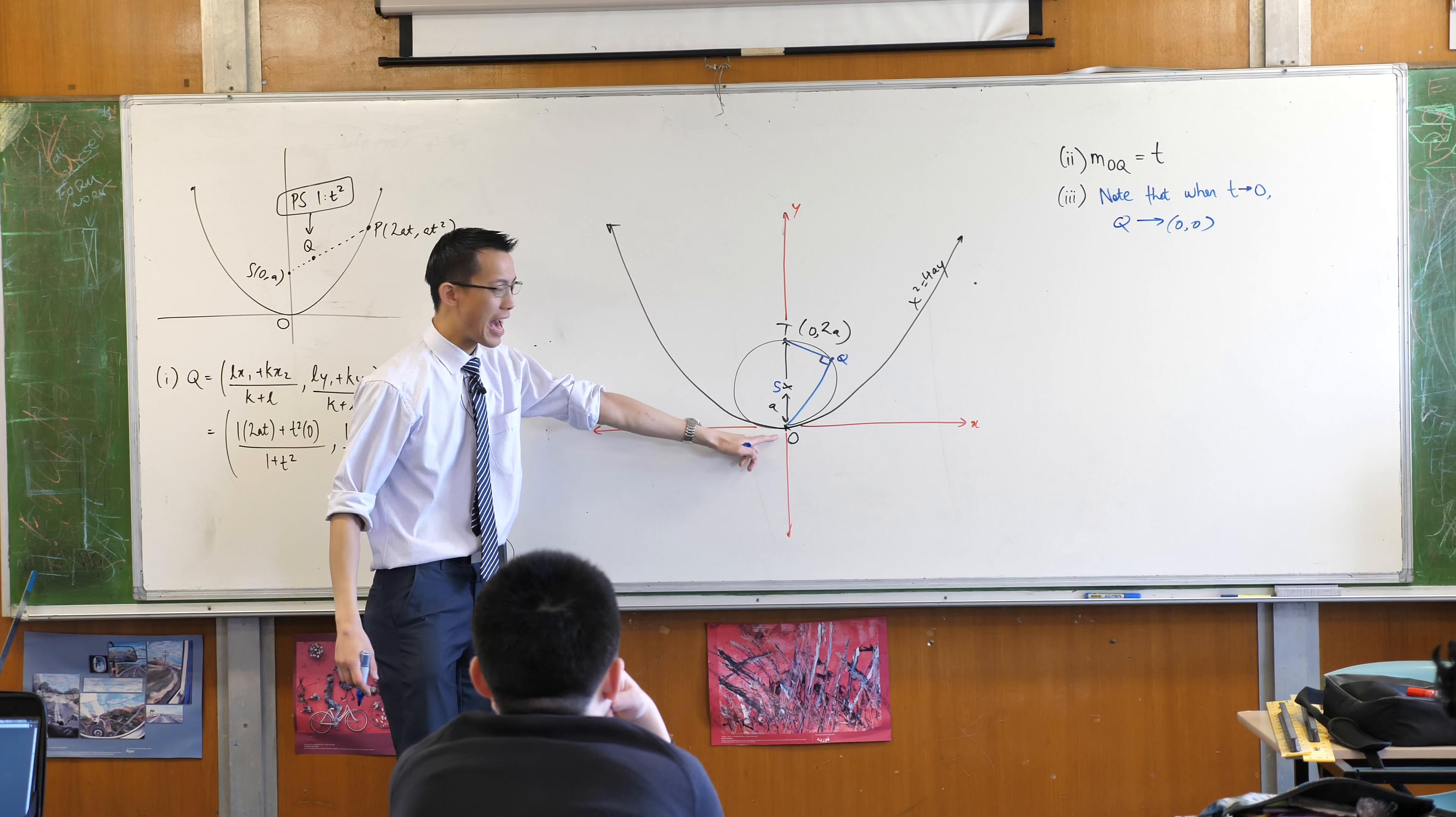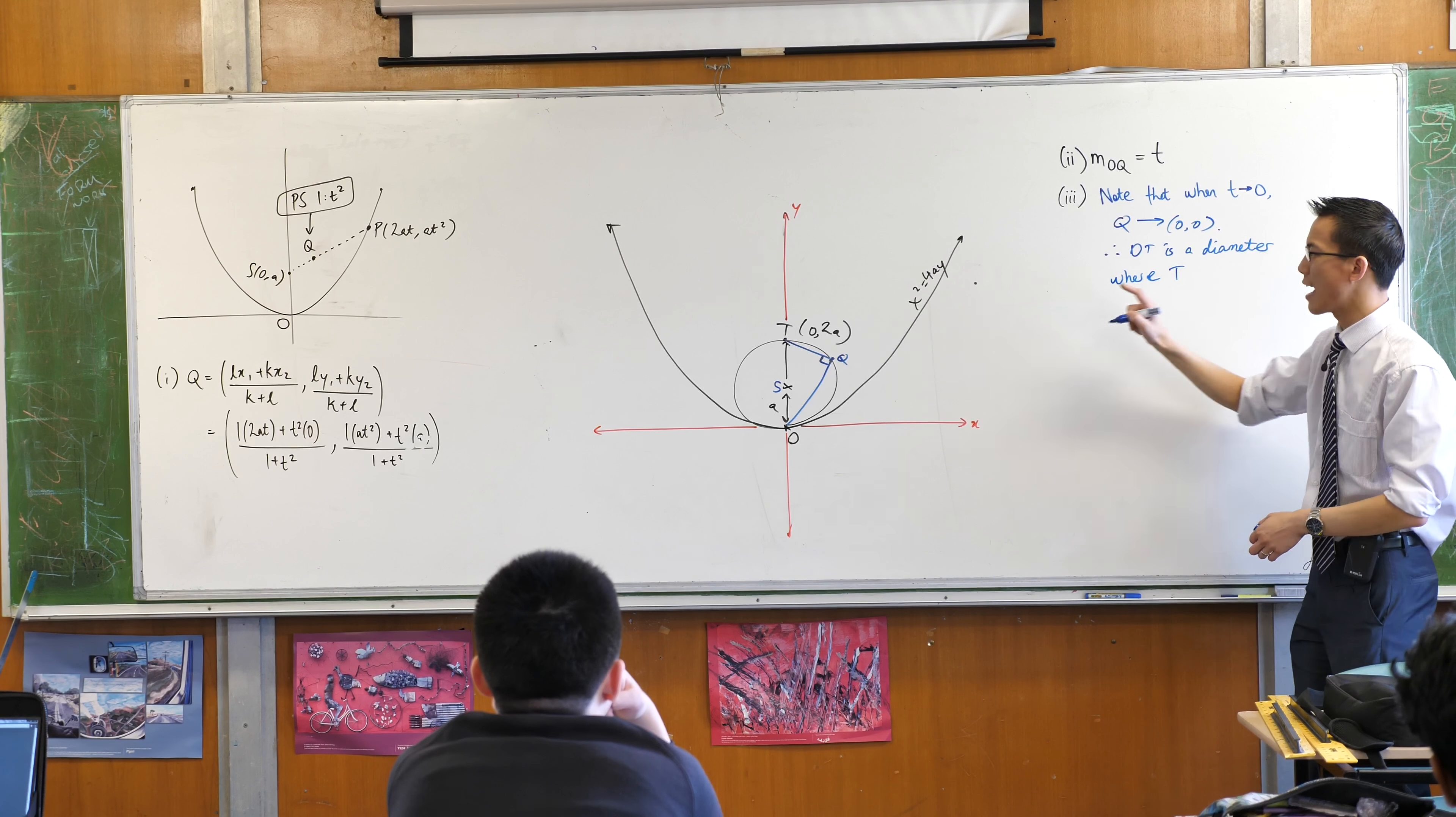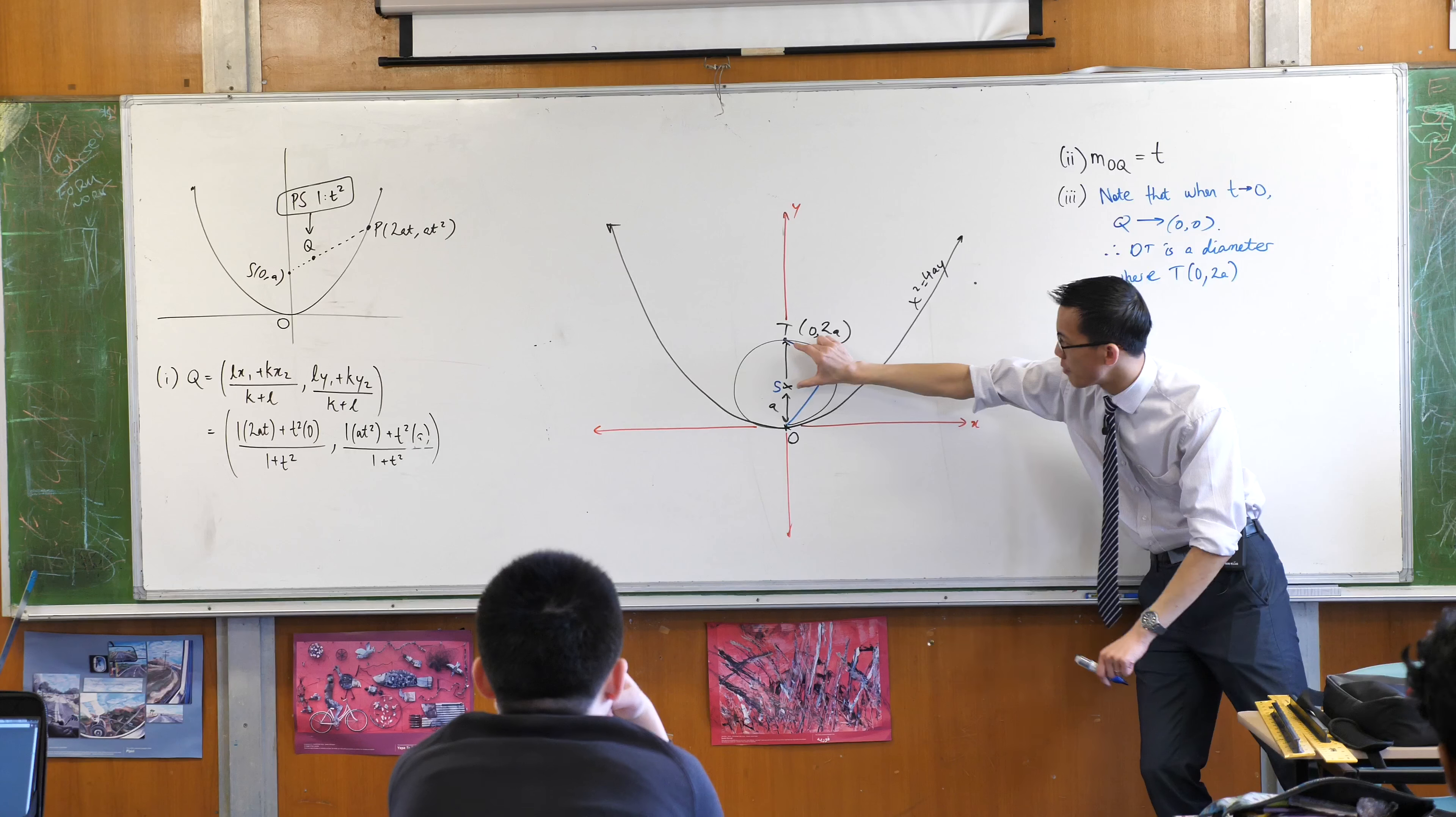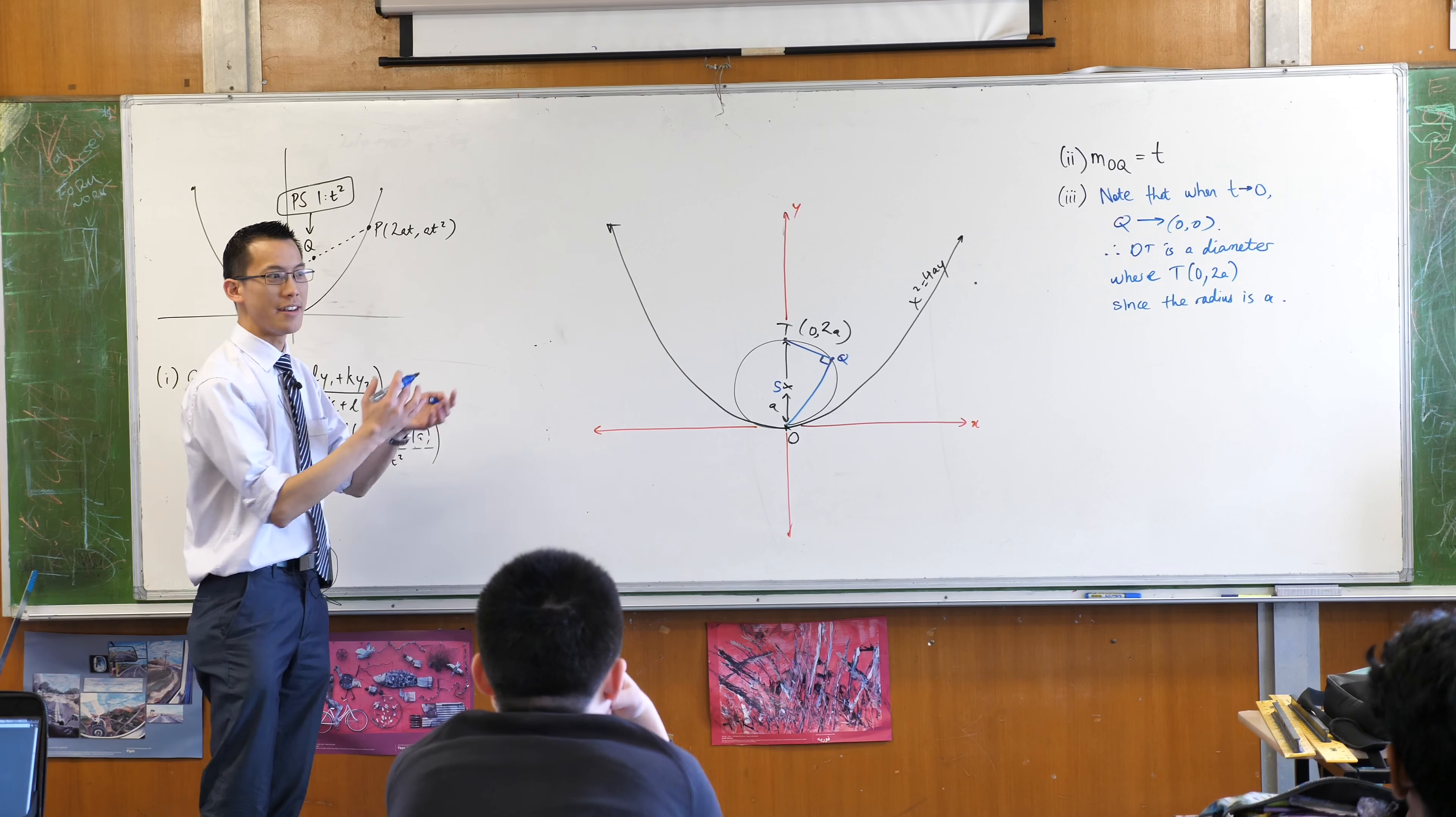Now, if that happened, then T is on the other side. So I can say, therefore, OT is a diameter where T has these coordinates, 0, 2A. Since, like, where did I get this number from? How did I work out it was 2A and not, like, say, 3A or 100A? It was from the radius from the focus. Do you remember that? So where T is that since the radius is A. Okay, so now I have established the significance of this T point to this circle that I'm hoping to prove. Now I'm going to go for the gradient.